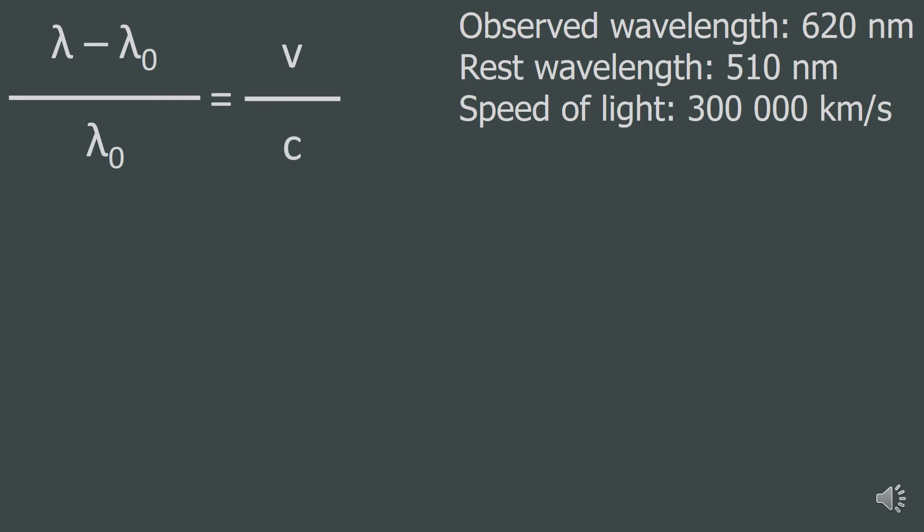So let's do an example. You should be given the equation in the exam, so you don't have to remember it, but you do have to remember what each of the symbols mean. A big one is remembering that lambda zero is the stationary wavelength. I like to think of it as lambda when the velocity is zero. Okay, so a question. An astronomer observes a wavelength of a spectral line in a spectrum of a galaxy as 620 nanometers. The same spectral line has the wavelength 510 nanometers when at rest. The speed of light is 300,000 kilometers a second. Determine the recession velocity.